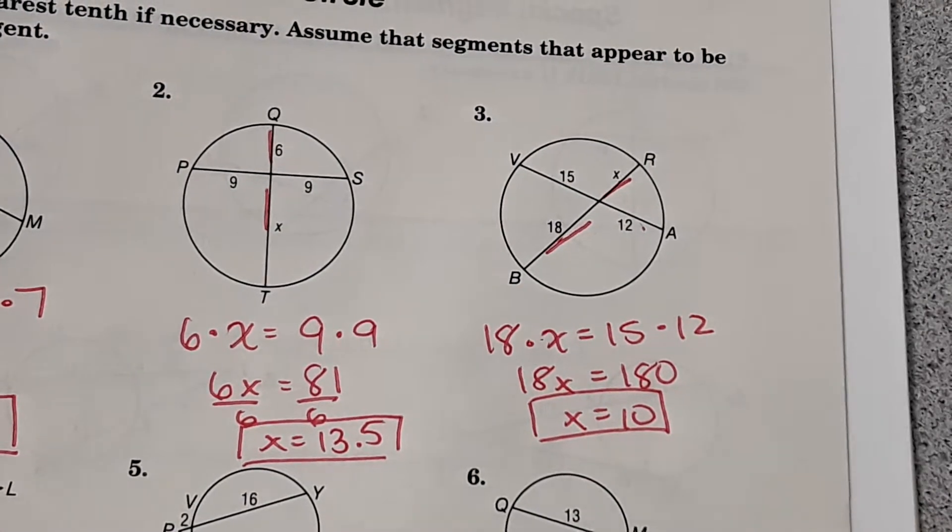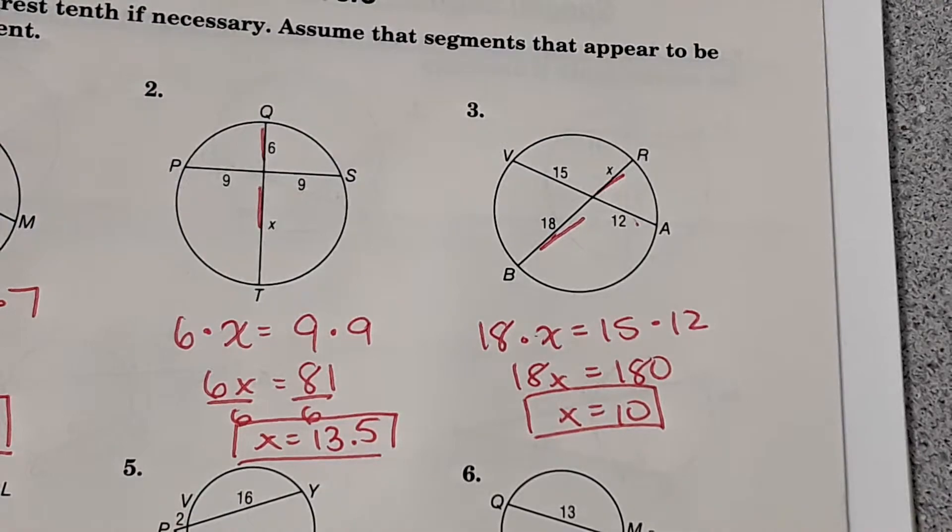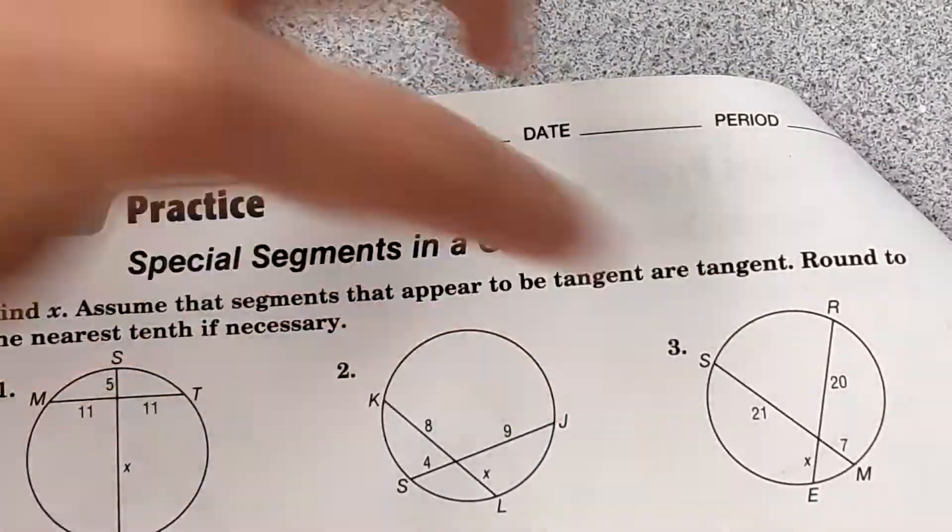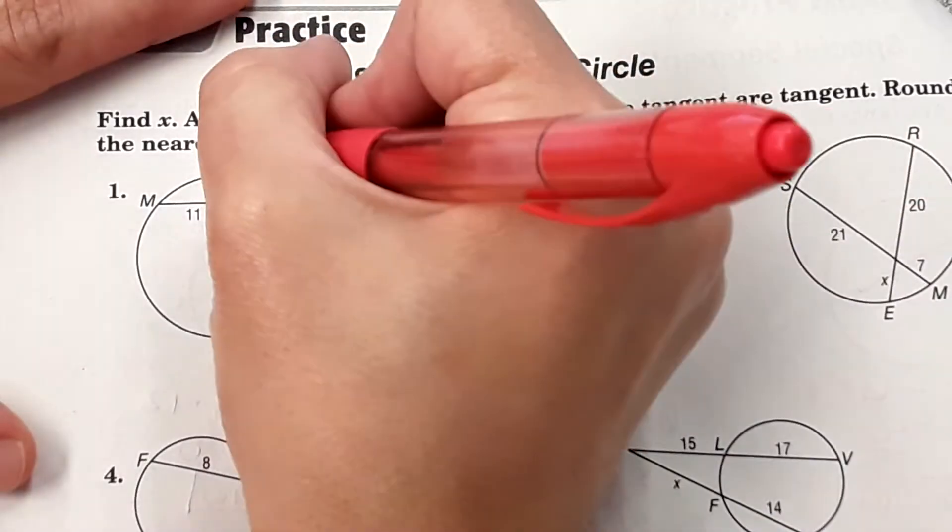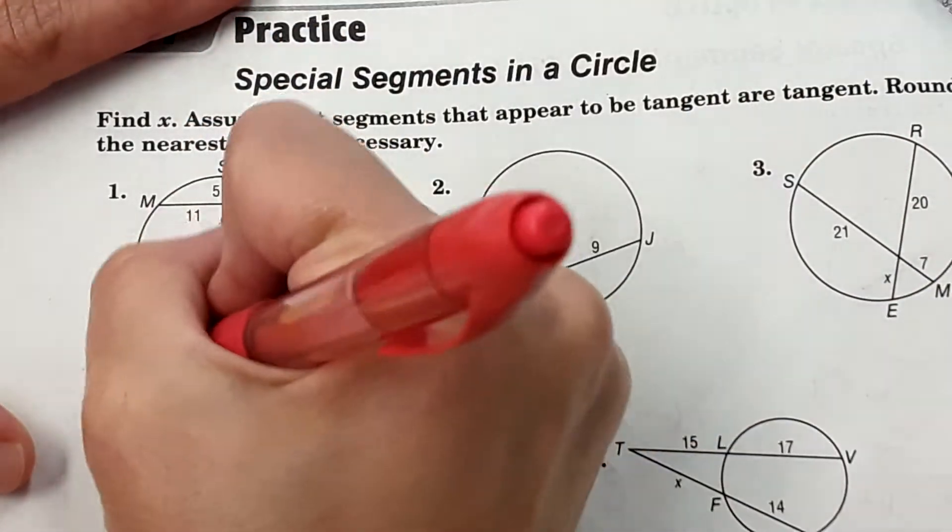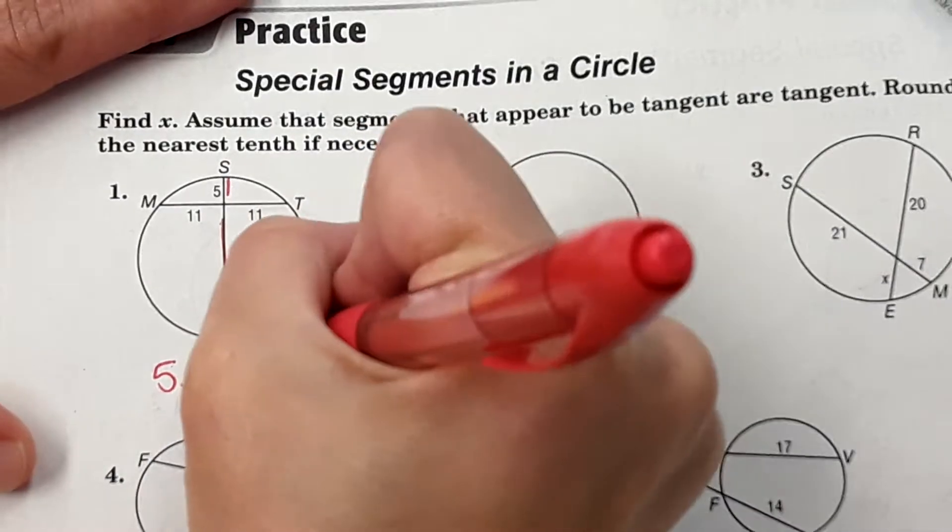While we're on this skill, we're going to practice the ones on the back. Just flip over to the back. We're going to do the top three there. So 1, 2, and 3. So it's just 5 times X equals 11 times 11.